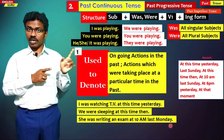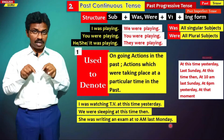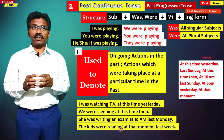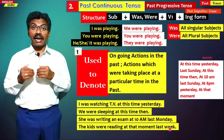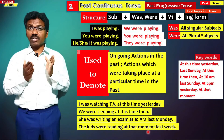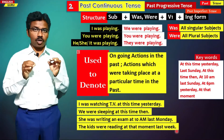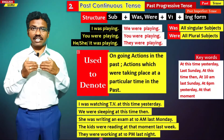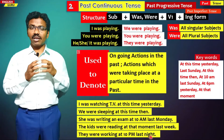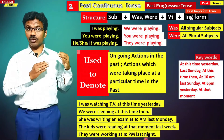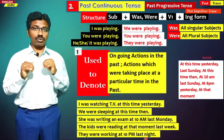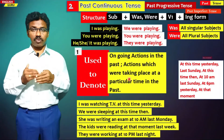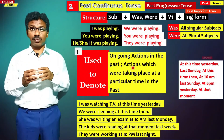Similarly, the kids were reading at that moment last week — at that moment they were reading, not right now. In a similar manner, they were working at 10 p.m. last night — not tonight, so past continuous tense is used to talk about all these activities which were happening sometime in the past.